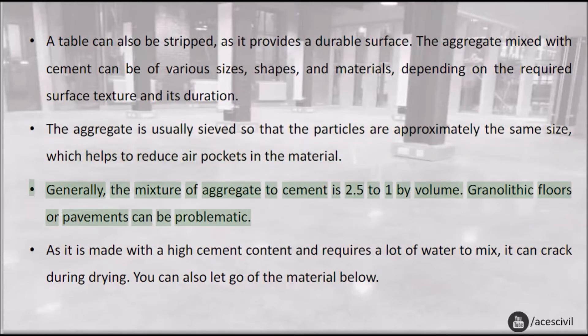Generally, the mixture of aggregate to cement is 2.5 to 1 by volume.